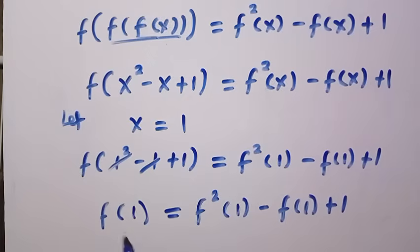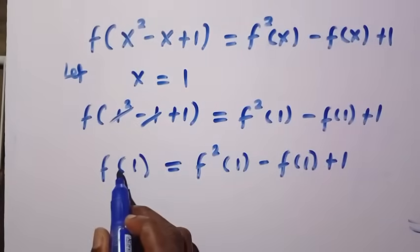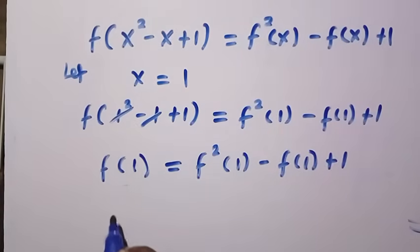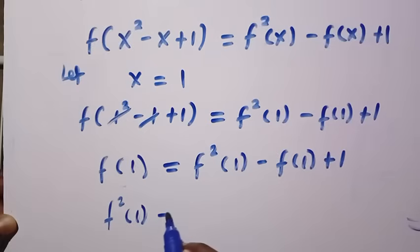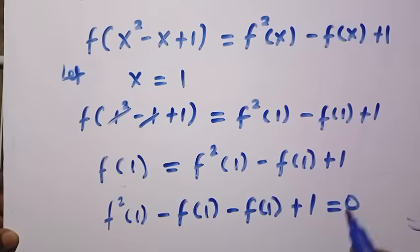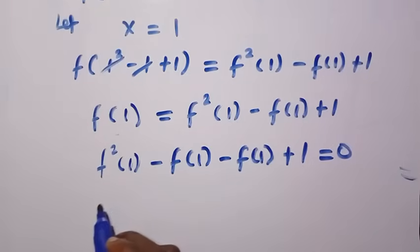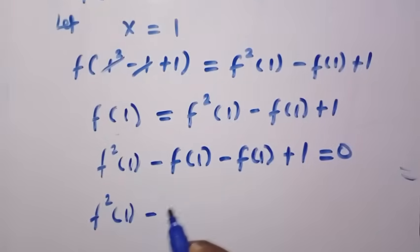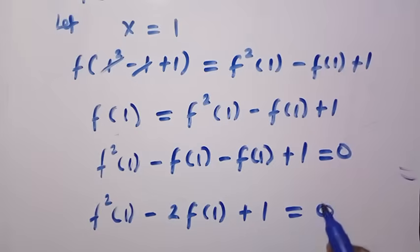So this side will have f of 1 and this is also f of 1. Suppose I transfer this f of 1 to the other side. So this side becomes f squared of 1. When it's coming here it changes to minus f of 1. Then we still have minus f of 1 plus 1 equals 0. Then we have f squared of 1 minus 2f of 1 plus 1 equals 0.